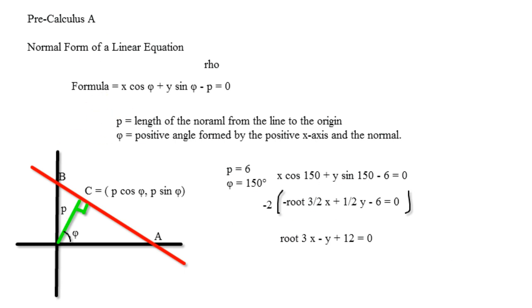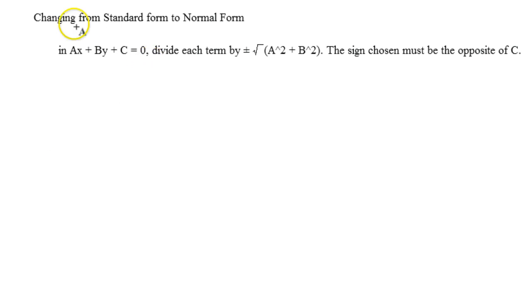It's not the normal form. Now changing from standard to normal, in other words, in ax plus by plus c equals 0, divide each term by plus or minus the square root of a squared plus b squared, and the sign chosen must be the opposite of c.